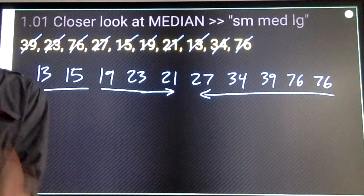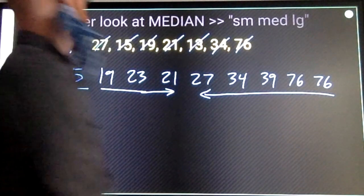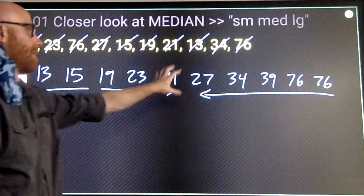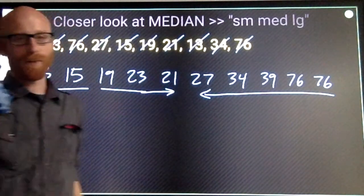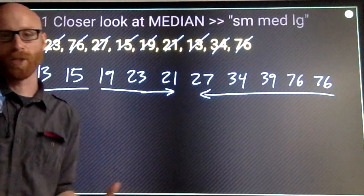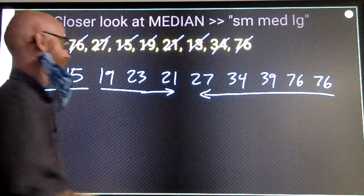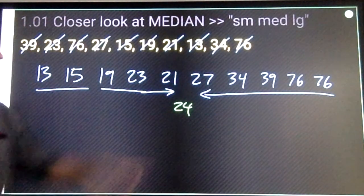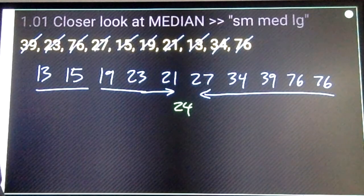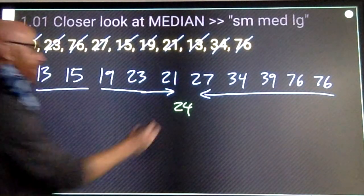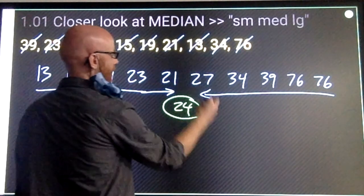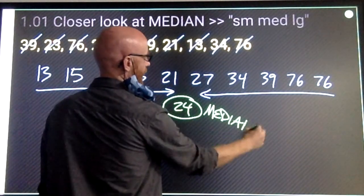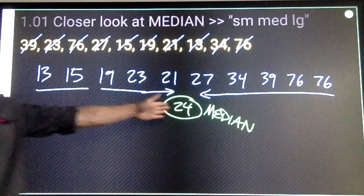If that happens, what you want to do is find a number that is halfway between them. Some people can tell just by looking. Halfway between 21 and 27, the number is going to be 24. 24 is three above 21 and it's three below 27. So that is what I would use as my median, even though it's not in the set. Because there's two numbers in the center, find a number halfway between them.